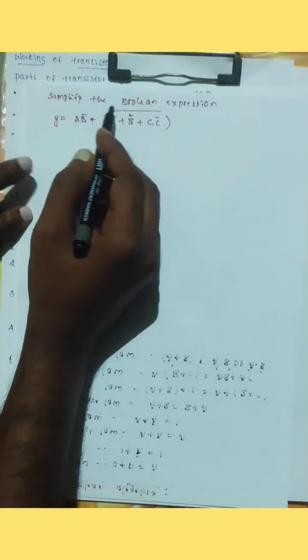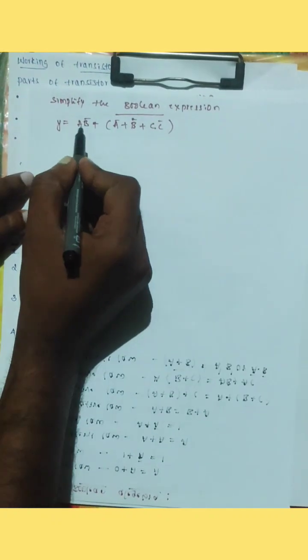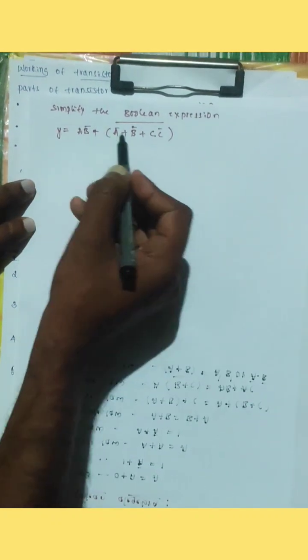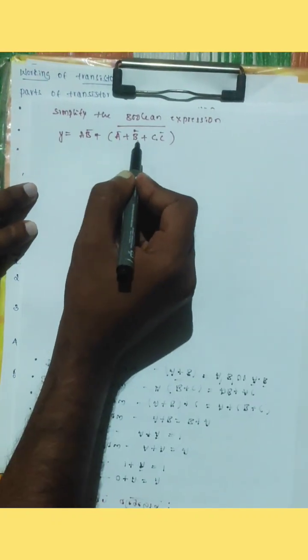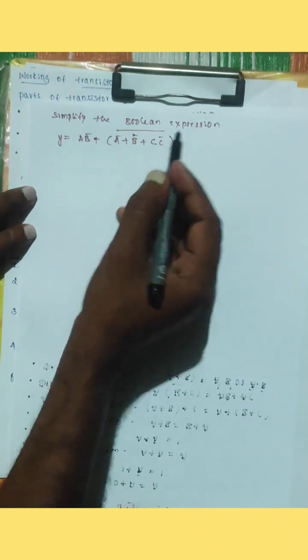Hello, hi viewers. Simplify the boolean expression: y equal to ab bar plus a bar plus b bar plus c into c bar, whole bar.